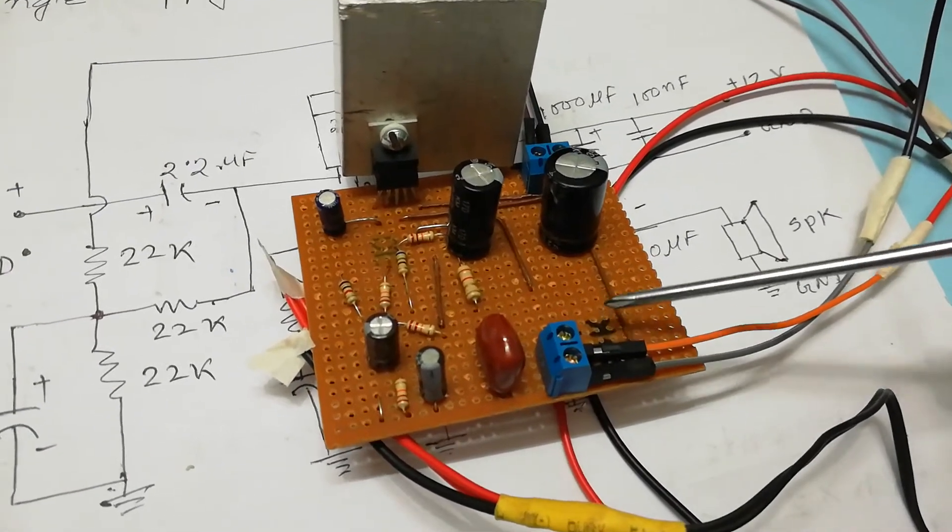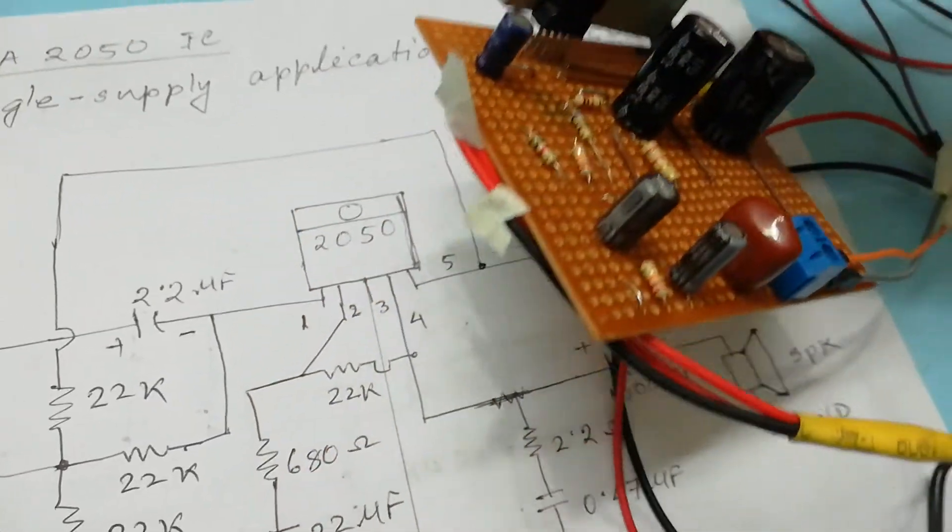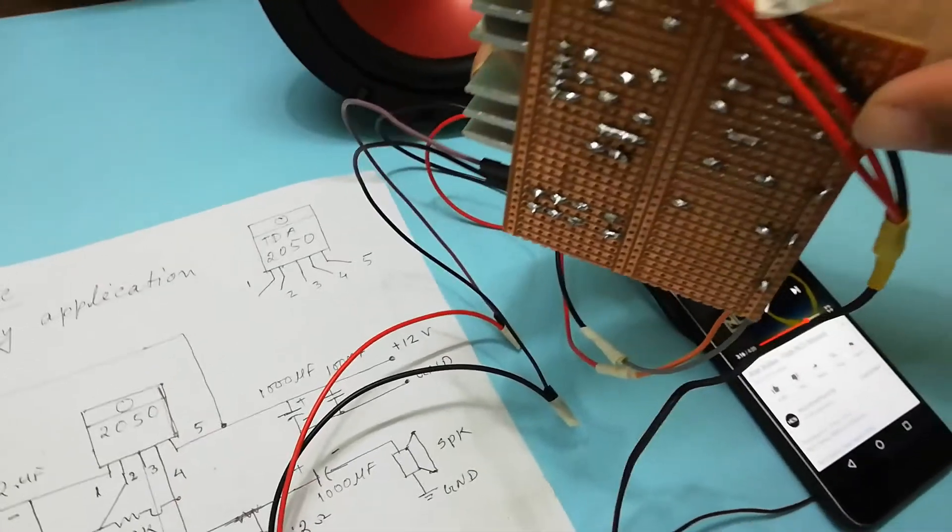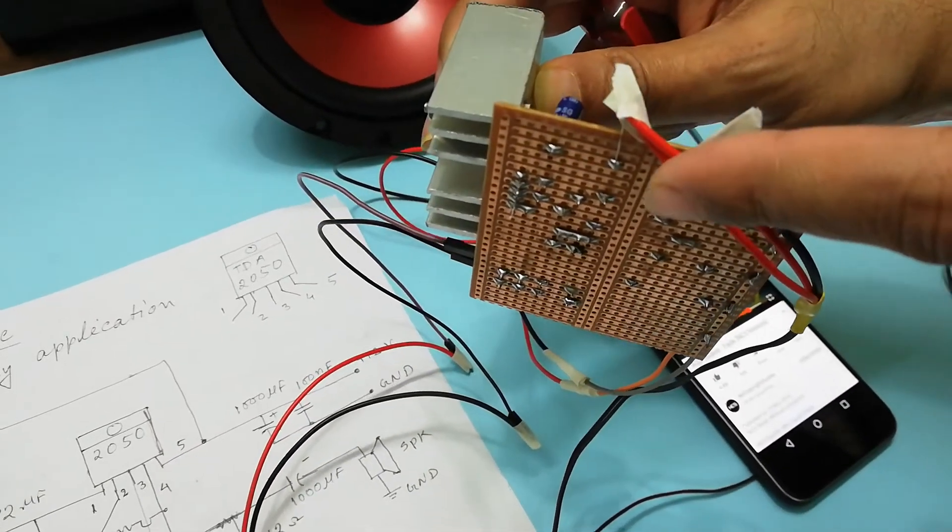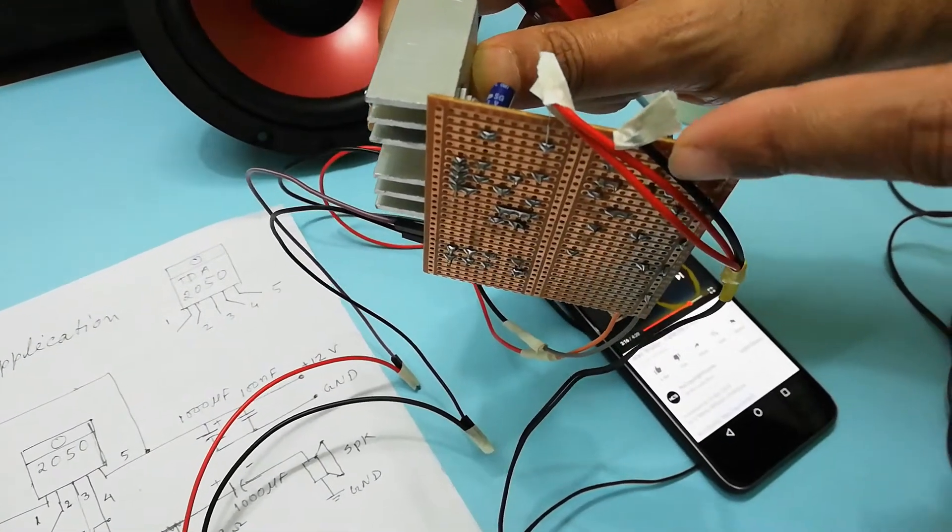This is the plus connection of the speaker and this is the minus, and this is the input of auxiliary cables input and ground. Two reds are line in of auxiliary or mobile input and this is ground.